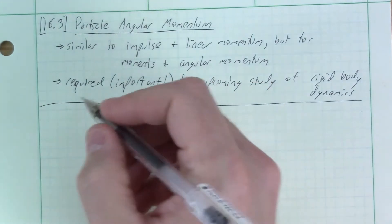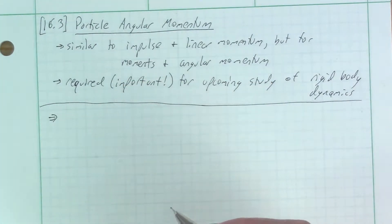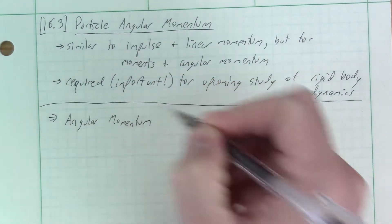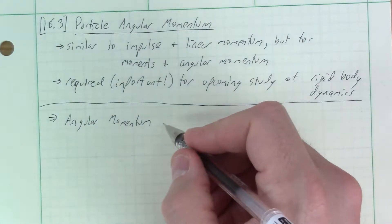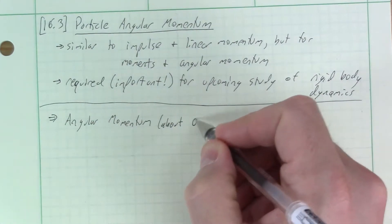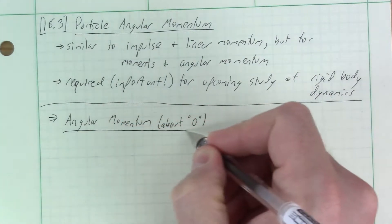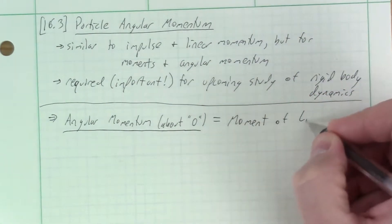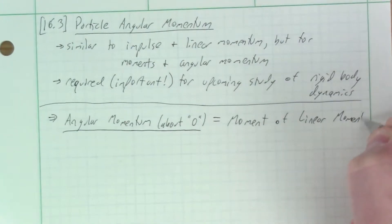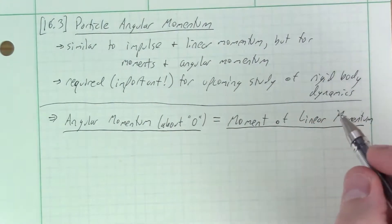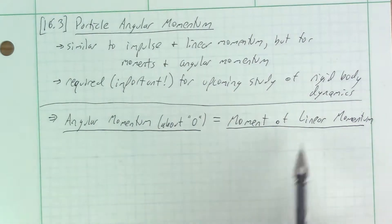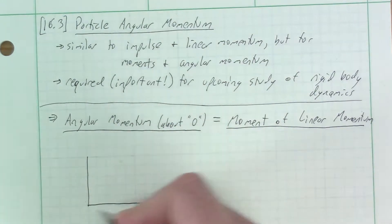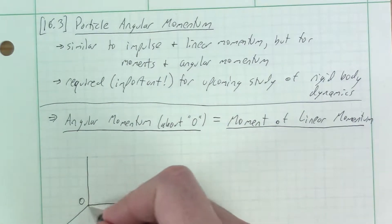Let's define what we mean by angular momentum. Angular momentum is going to be about the origin of a coordinate system by definition. The definition is the moment of linear momentum — we're taking linear momentum and taking the moment of it, taking the cross product with the distance from the origin. That's why this is angular momentum about a particular point in space, which is the origin of the coordinate system.